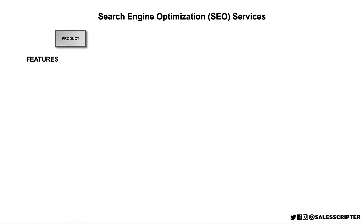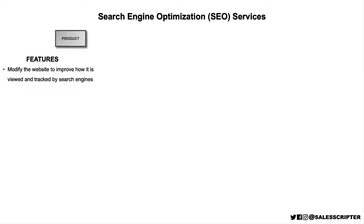Starting with the first step: I recommend you outline the key features of what you sell. That can sometimes seem like it doesn't really fit when you sell a service, but I recommend you view what you sell — whether it's a product or a service — as being a box. When someone buys from you and you're delivering your service, what is in the box? If you're going to buy our search engine optimization services, we're going to help to modify your website to improve how it is viewed and tracked by search engines.